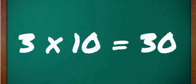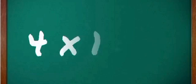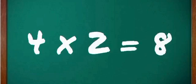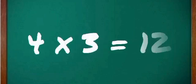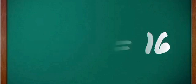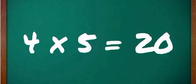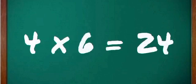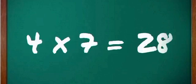3 ten's a 30. Okay, now 4. 4 one's a 4, 4 two's a 8, 4 three's a 12, 4 four's a 16, 4 five's a 20, 4 six's a 24, 4 seven's a 28.